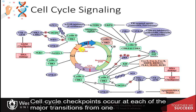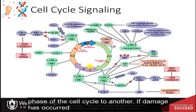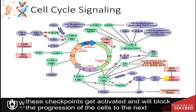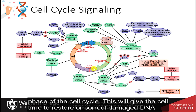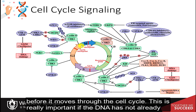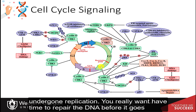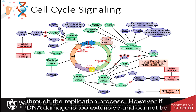Cell cycle checkpoints occur in each of the major transitions from one phase of the cell cycle to another. If damage has occurred, these checkpoints get activated and will block the progression of the cells to the next phase of the cell cycle. This will give the cell time to restore or correct damaged DNA before it moves through the cell cycle. This is really important if the DNA has not already undergone replication — you really want to have time to repair the DNA before it goes through the replication process.